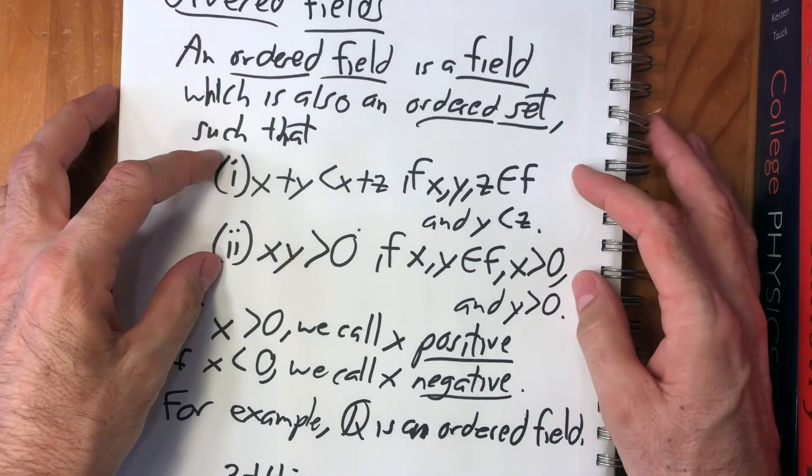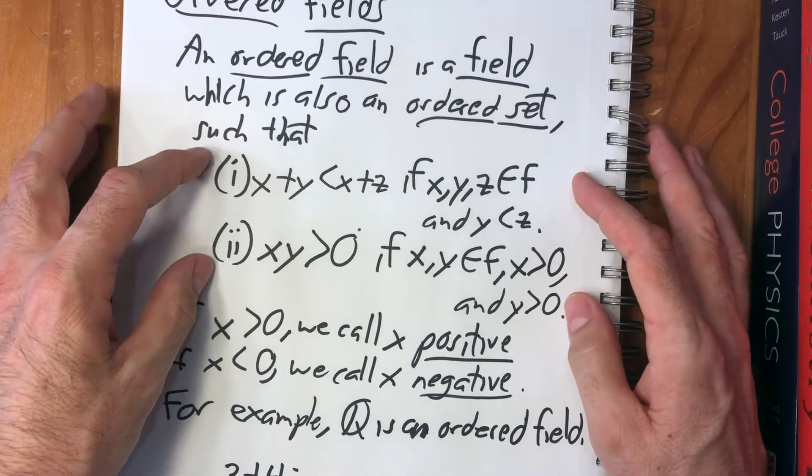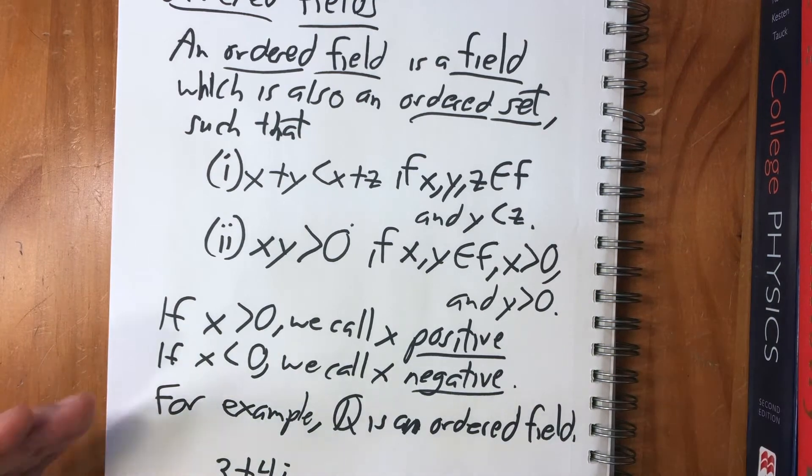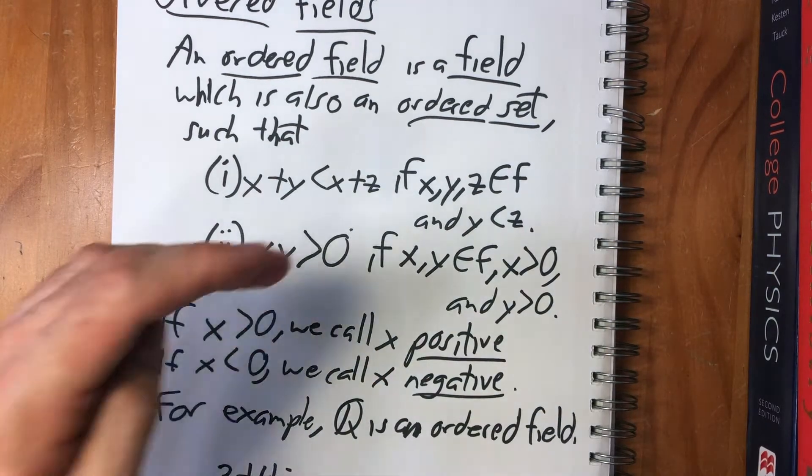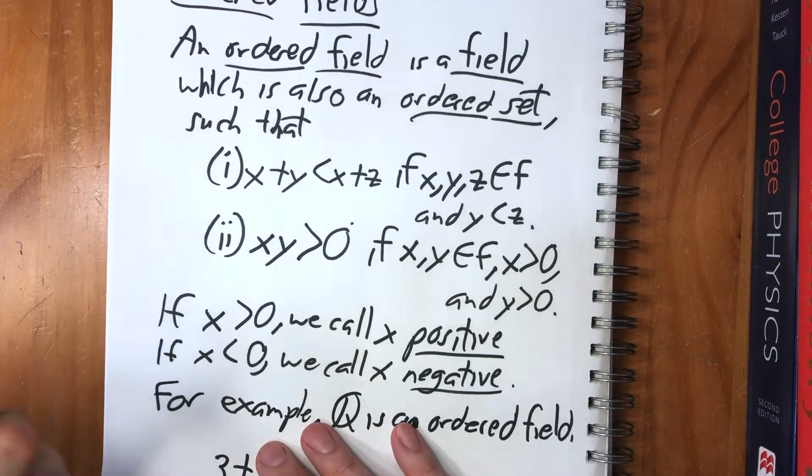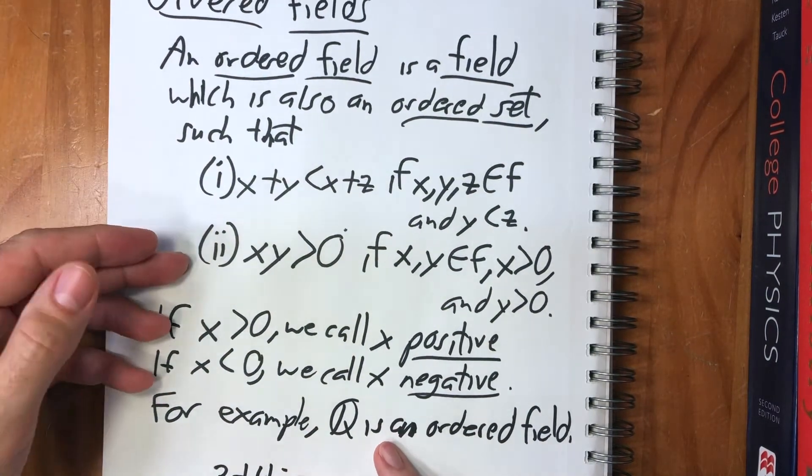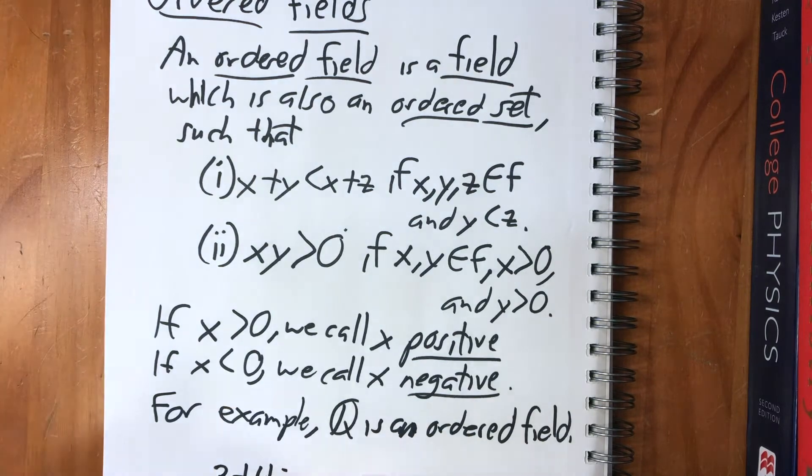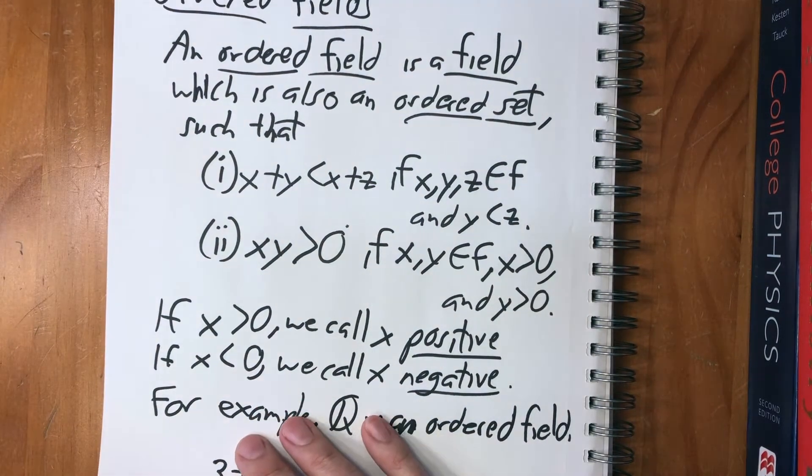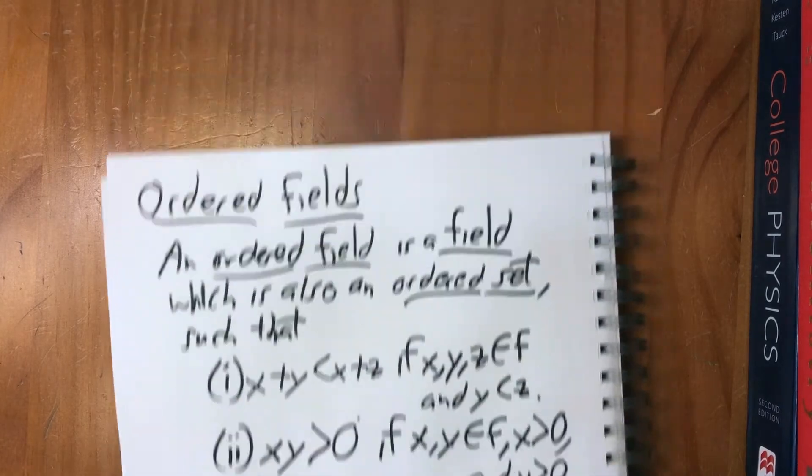These two things are the only two things that we're having to posit. Everything else that you know about less than, equal to, adding to both sides, and so on, can all be deduced from this. That's quite amazing, because once again, over time, the mathematicians have boiled down what's essential and what's deducible. And this is all we need in order to make everything that we know about ordered fields true.